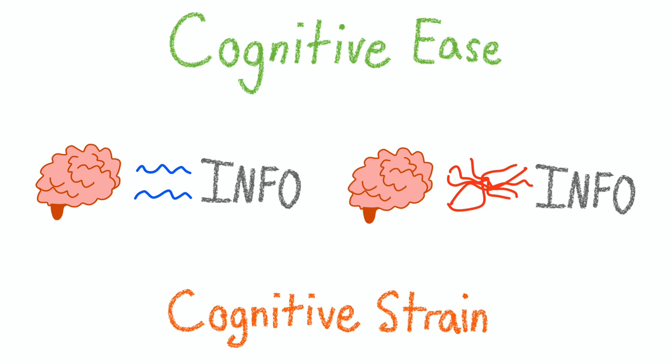Cognitive strain is the opposite and is when it takes effort for your brain to process information and puts you in strain. Kahneman argues that cognitive ease and cognitive strain help govern how we process the world around us and the implications can be scary.